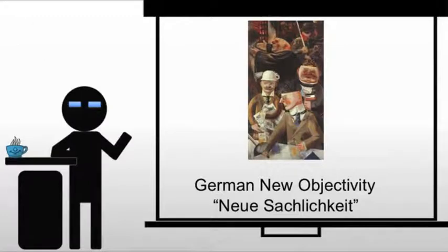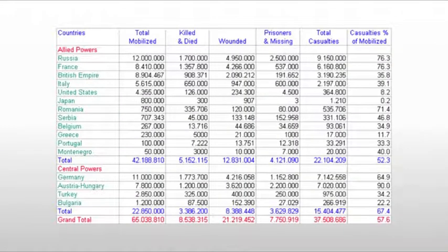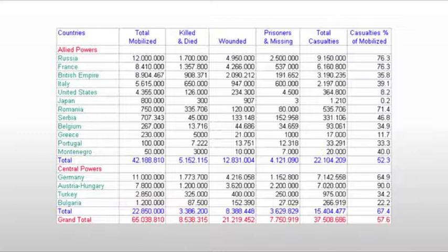So now we're moving to German New Objectivity. Before we get into New Objectivity, we need to talk about World War I. German New Objectivity exists because of World War I — it is a reaction to the war. You need to understand how horrific this war really is, because as Americans, we don't tend to think about it much.